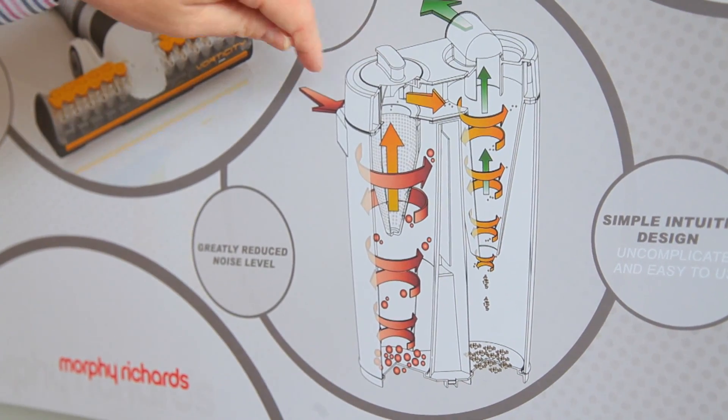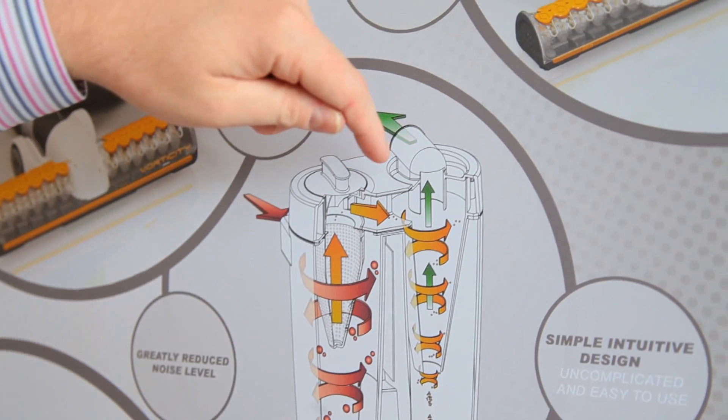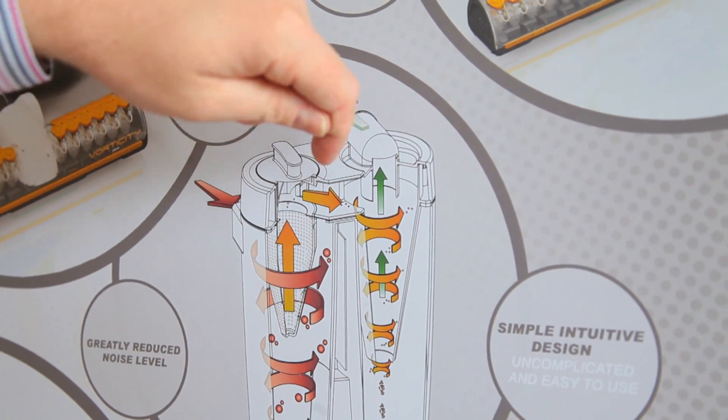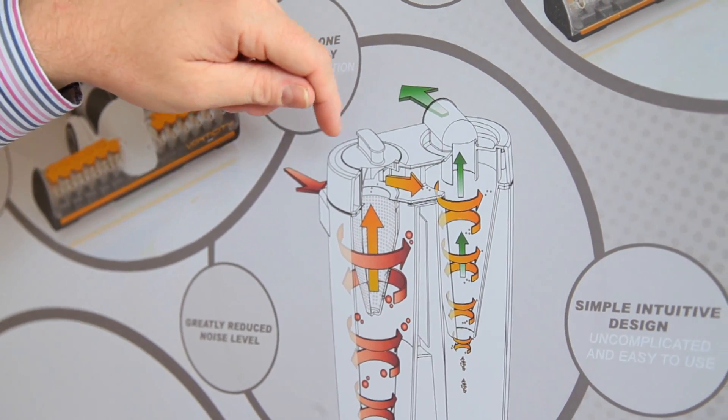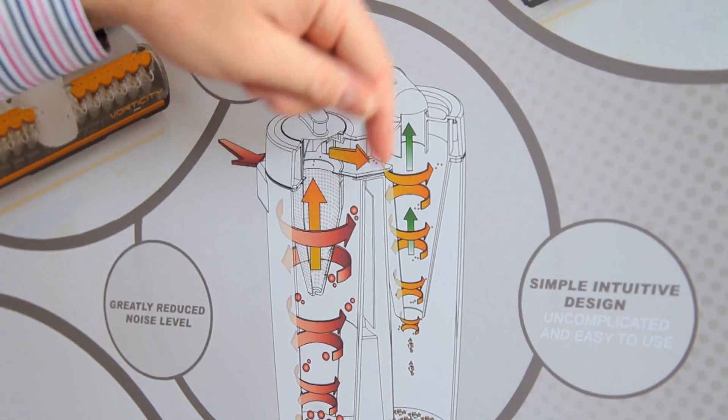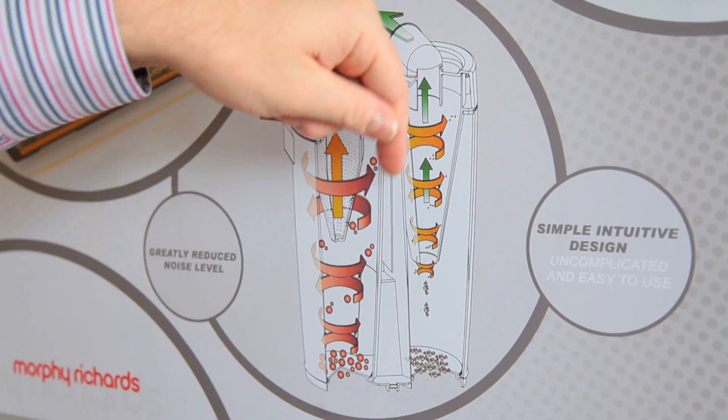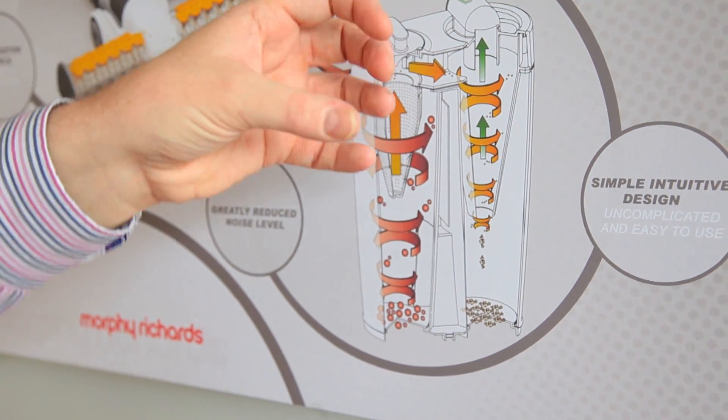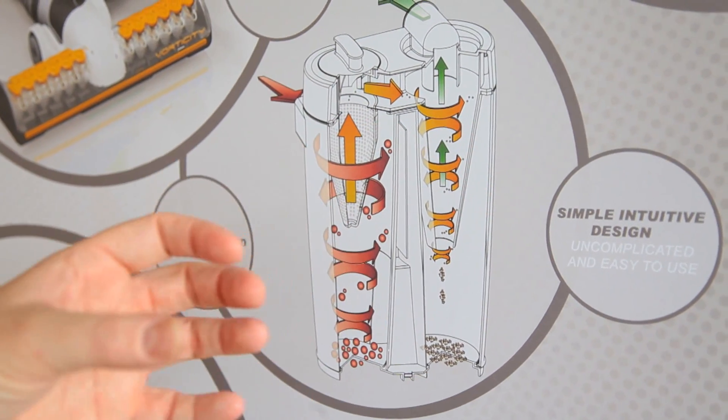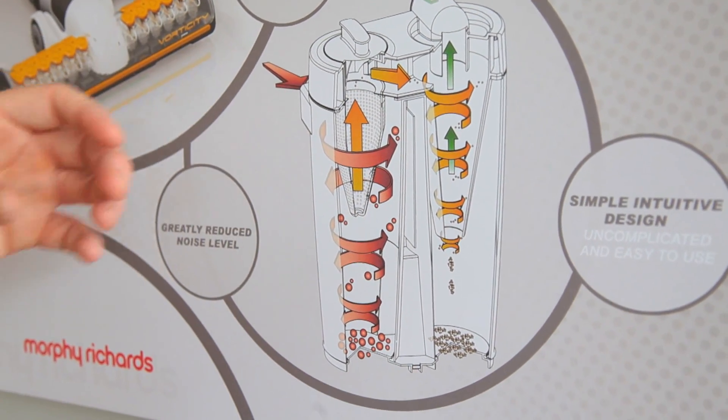So on here, air comes across into the frustro cone. The purpose of the frustro cone is to accelerate the airspeed to generate centrifugal forces. So as the airspeed increases as it goes down the cone, the centrifugal forces mean that the dust and dirt particles will cling to the outside of the wall, a bit like one of those fair rides.